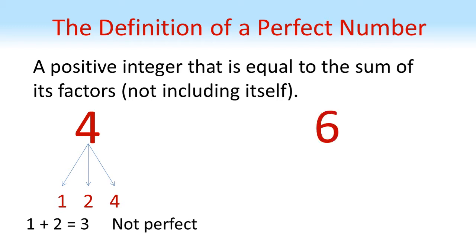6, on the other hand, has factors 1, 2, 3, and 6. 1 plus 2 plus 3 does equal 6, hence 6 is a perfect number. In fact, 6 is the first perfect number, which you can quickly check by finding the factors of the numbers below it.